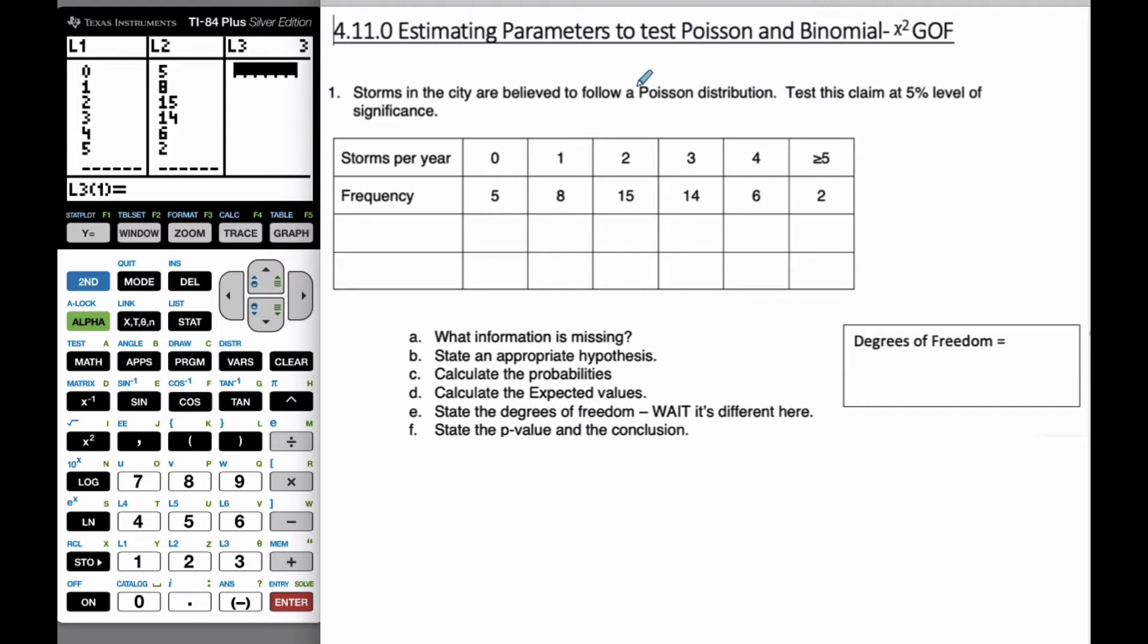Okay, so for this problem here, we're going to have to do some estimated parameters to test for a Poisson and a binomial, and then do some chi-squared goodness of fit. We know that storms in this city are believed to follow a Poisson distribution. Do we know the mean or standard deviation, or the variance? Test this claim at the 5% level.